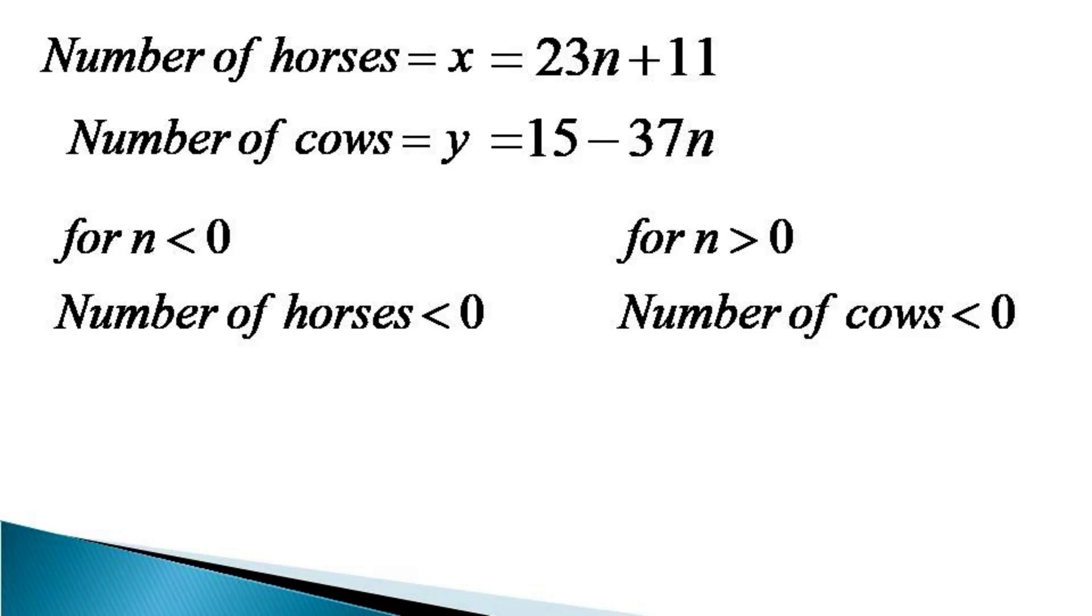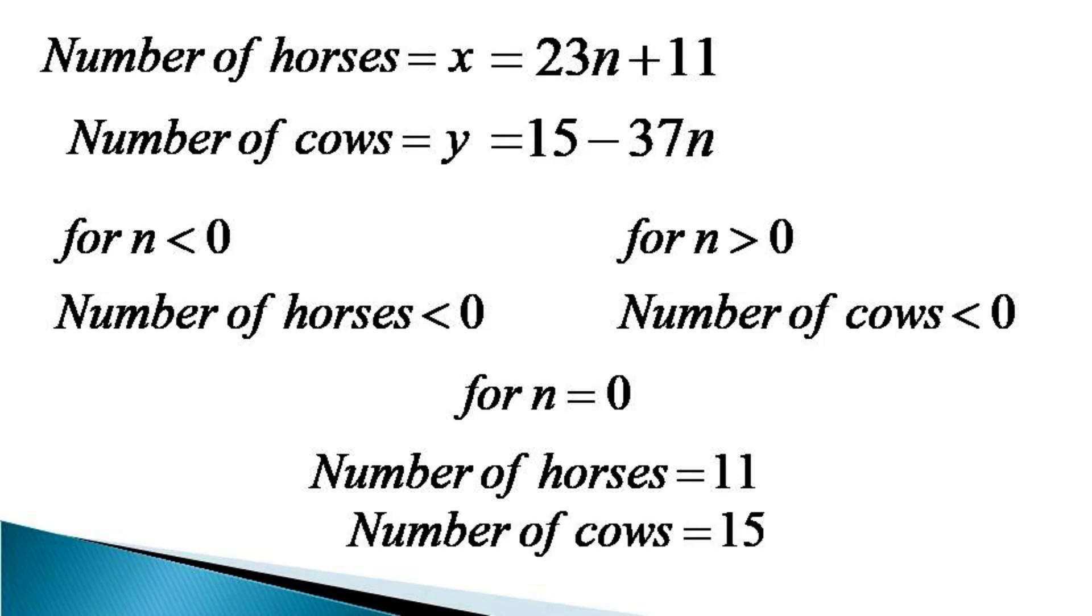So a positive value is also not possible. We go for n is equal to 0 and for n is equal to 0 we find that the number of horses are 11 and number of cows comes equal to 15 and this is the only solution of this Diophantine equation.